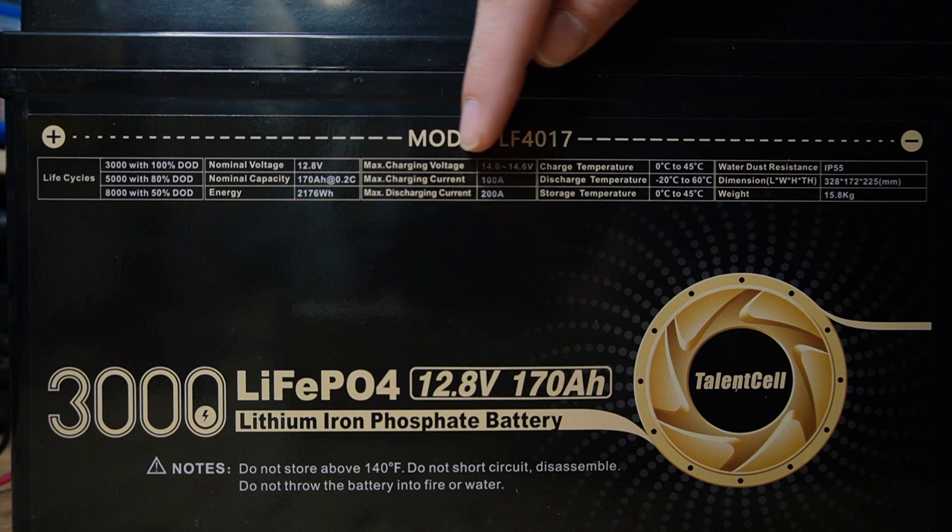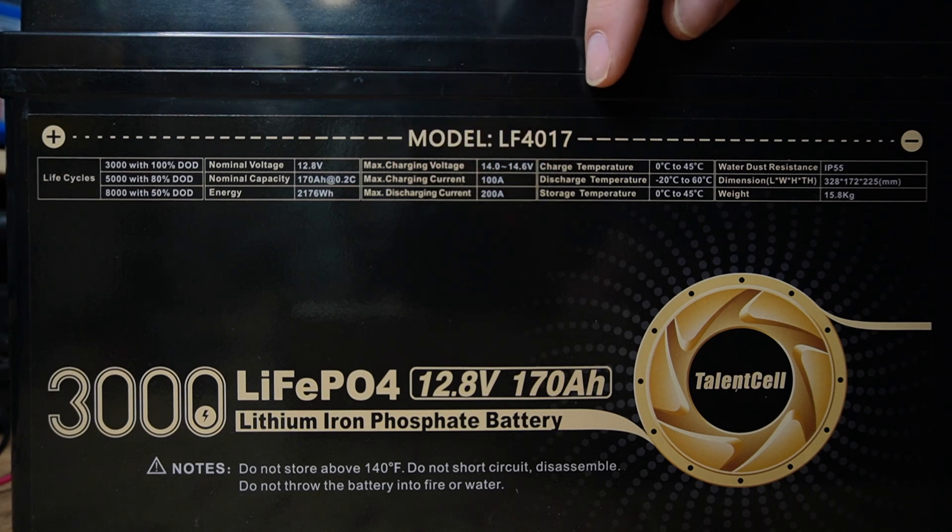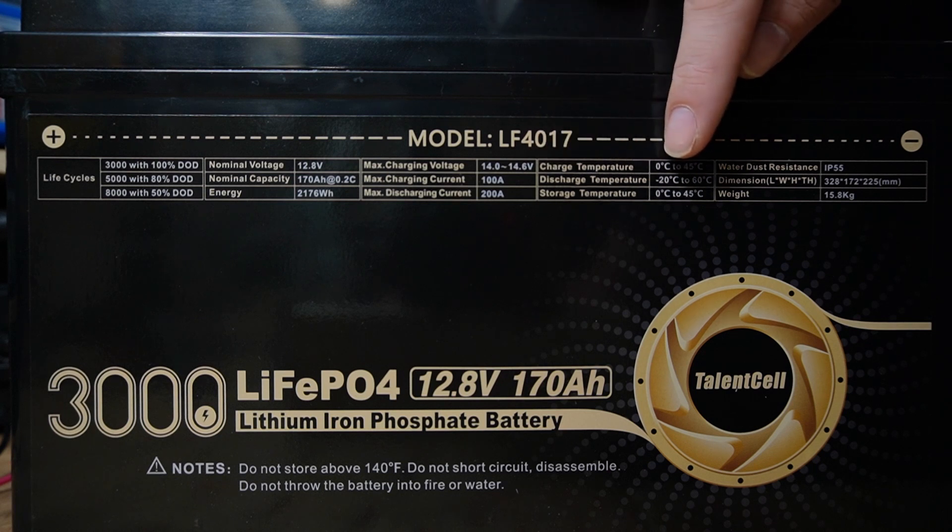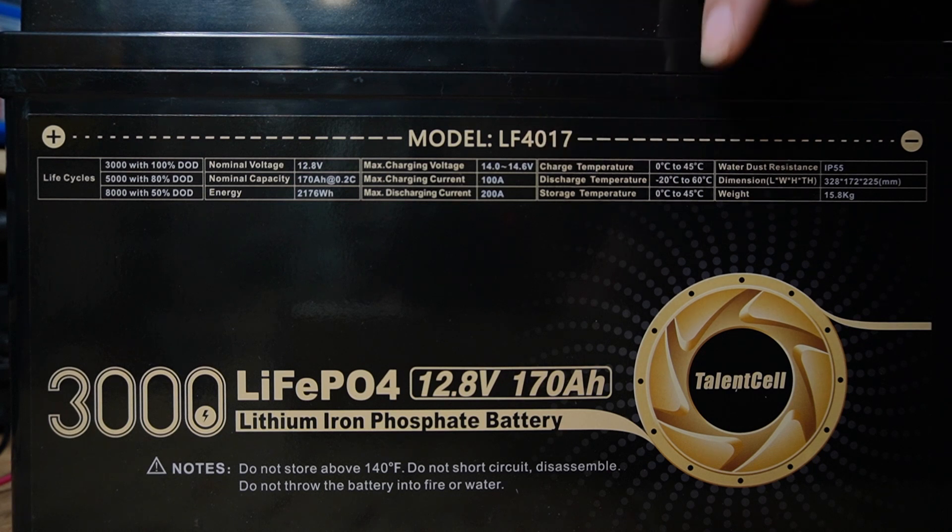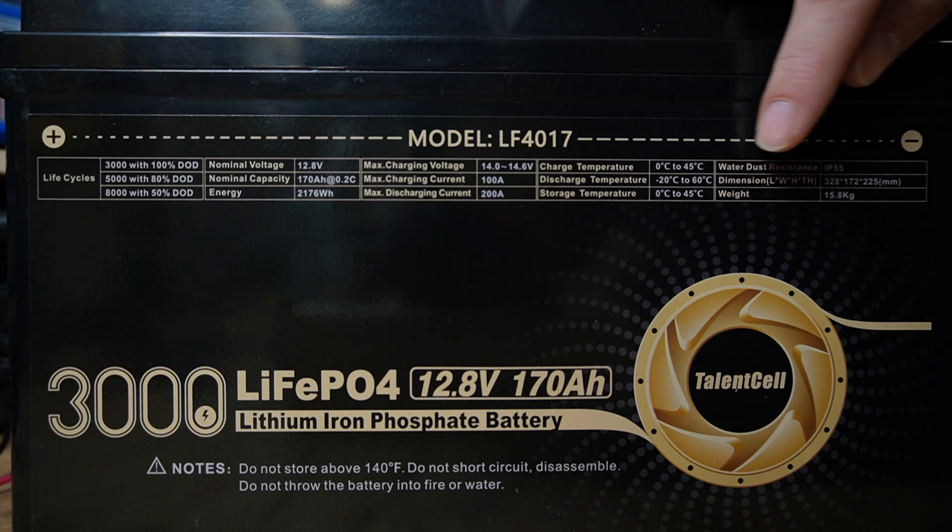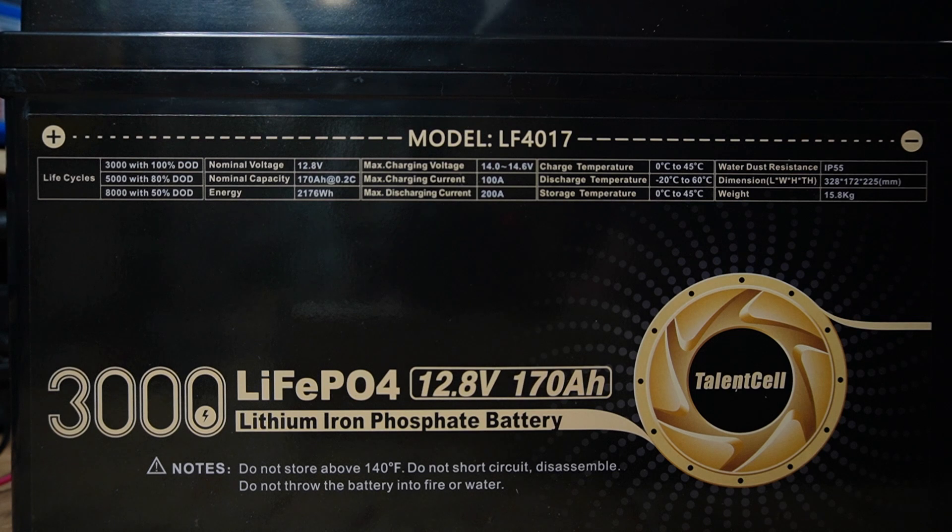Maximum discharge current is 200 amps. Charging temperature is 0 to 45 degrees, discharge temperature minus 20 to 60 degrees, storage temperature 0 to 45 degrees, and an IP55 water rating. Battery dimensions and weight of 15.8 kilograms.